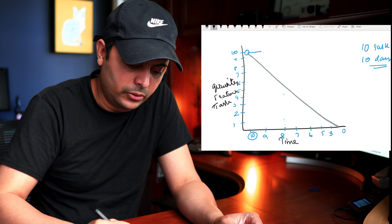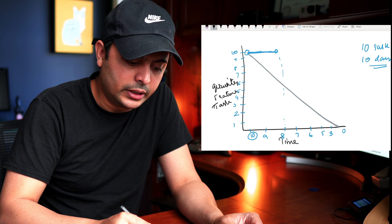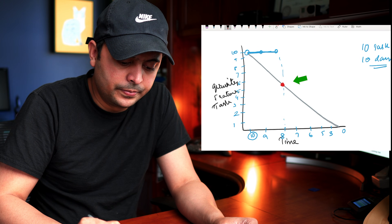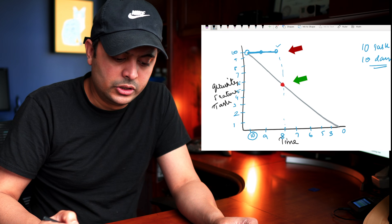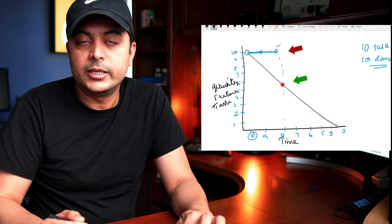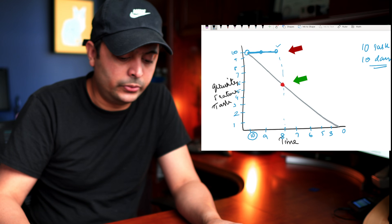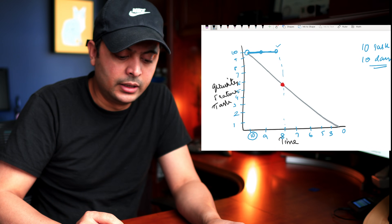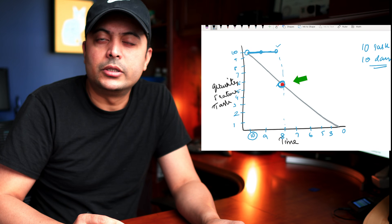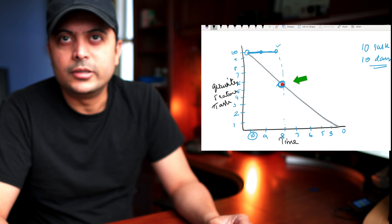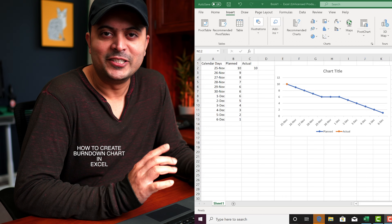By looking at the flat line you can see where you're supposed to be versus where you actually are. That gives a great indication for the leadership team: you planned to be at a certain point on day 8, but you're not there. That's what the burndown chart is all about.